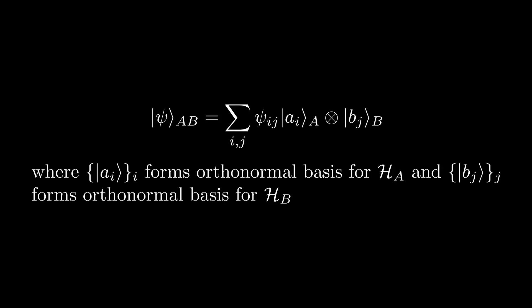Now that we have defined bipartite systems, and we now know how to describe their constituent subsystems, let's talk about how we can decompose a pure state in terms of tensor products of states and its constituent subsystems. In general, of course, if system AB is described by some pure state psi, we can write it as an arbitrary sum as follows, where AI and BJ are orthonormal basis vectors for Hilbert spaces HA and HB, respectively.